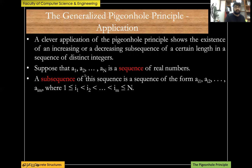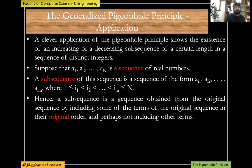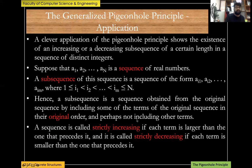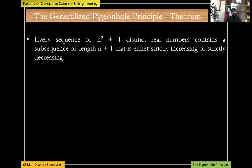A subsequence is obtained from the original sequence by including some terms in their original order — the order must not change. A sequence is strictly increasing if each term is larger than the one before it, and strictly decreasing if each term is smaller than the one before it.